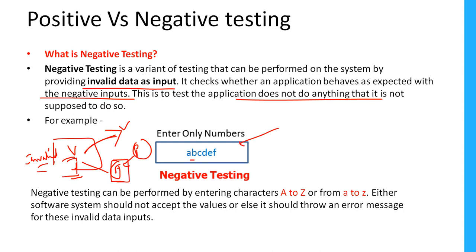For example, if a text box asks only for numbers but I provide some alphabets, that comes under negative testing. Negative testing can be performed by entering characters like A to Z uppercase, A to Z lowercase alphabet characters. If the application restricts that input and fails, our test is passed — that is negative testing.